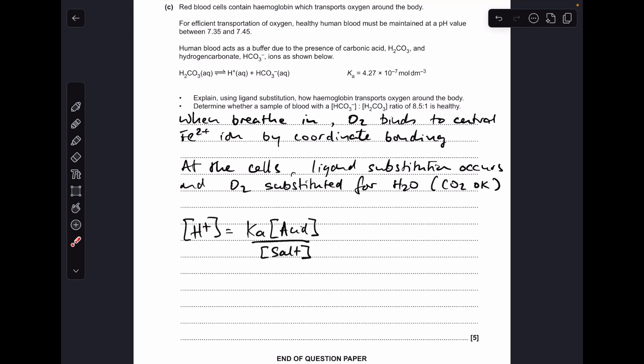And now the calculation. We're talking about a buffer solution, so therefore we need to be thinking Ka × [acid] ÷ [salt]. The H⁺ concentration of a buffer is equal to the Ka of the weak acid multiplied by its concentration divided by the salt concentration.